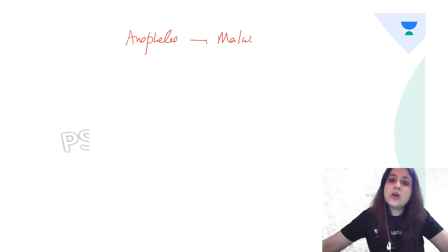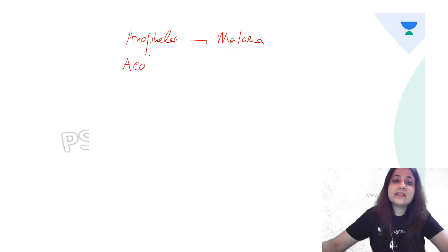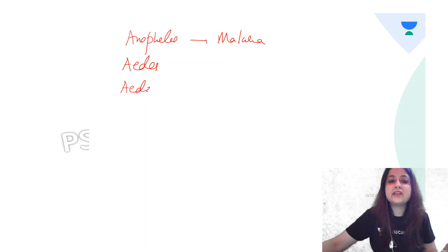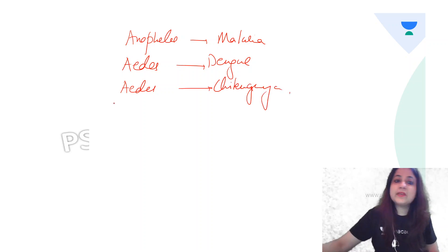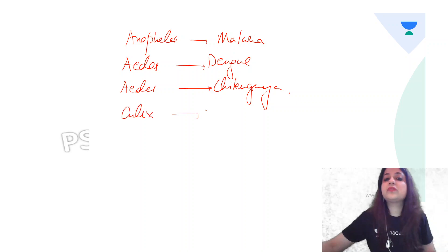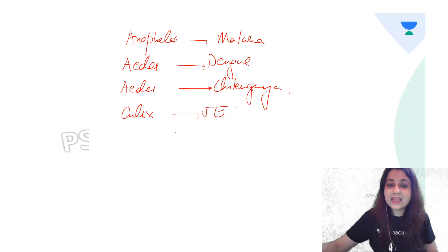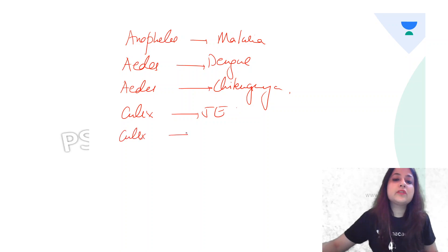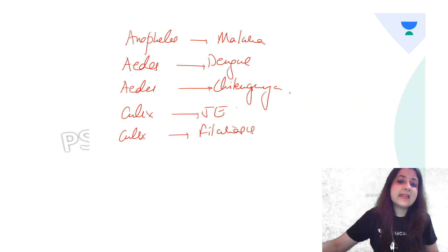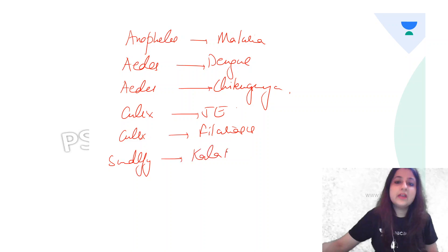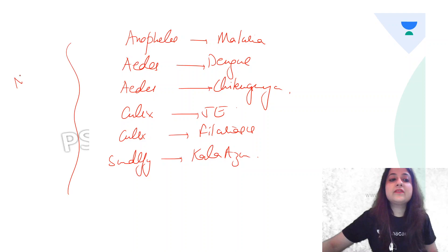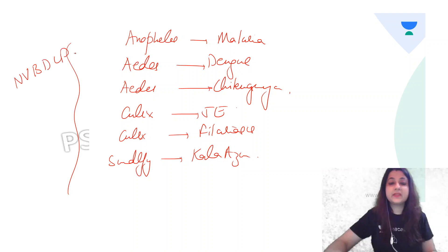Regarding disease transmission: Anopheles is responsible for Malaria. Aedes transmits Dengue and Chikungunya, both included in the National Vector Borne Disease Control Program. Culex is responsible for Japanese Encephalitis and Filariasis. Sandfly, also in the national program, is responsible for Kala-azar or Leishmaniasis.